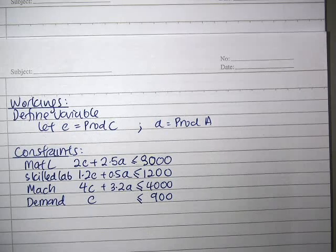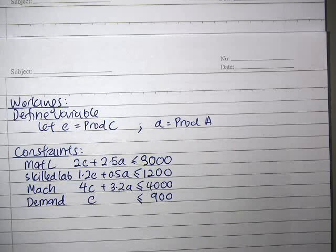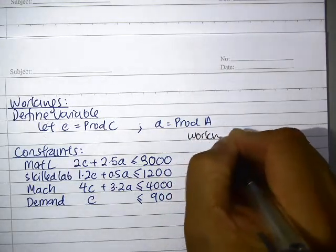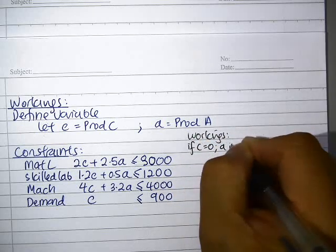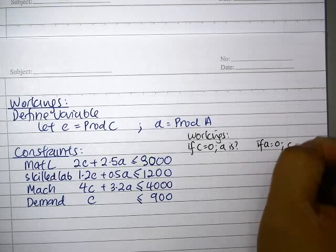Basically what we're going to do is to draw these lines onto the graph. To do that, I'll need a simple working calculation where if C equals 0, what's A, and if A equals 0, what's C.